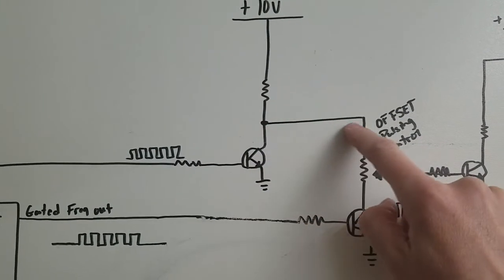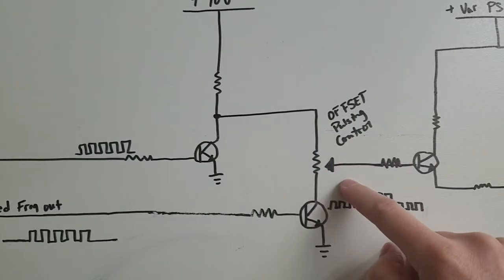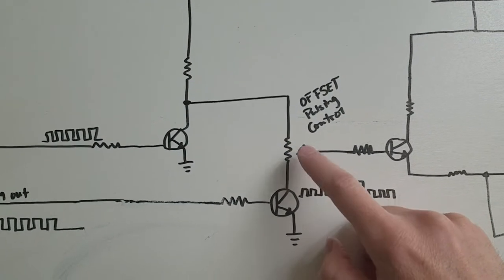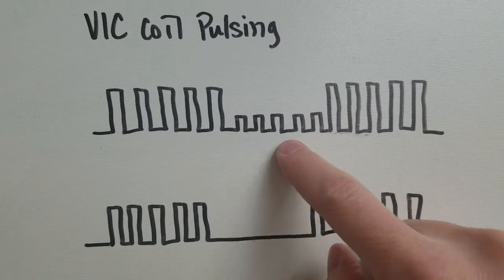Now when I tap off of that and then put that through a potentiometer I can change the amplitude of these pulses during the off time.